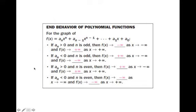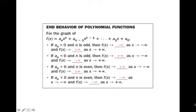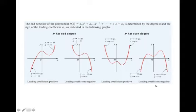When you have an even-degree polynomial with a negative coefficient — just like a quadratic where a is negative — it looks like it's frowning at you, so both ends go down. The left end goes down and the right end goes down. f(x) goes to negative infinity as x goes to negative infinity, and f(x) goes to negative infinity as x goes to positive infinity. Pictures make a lot more sense than just writing it out.